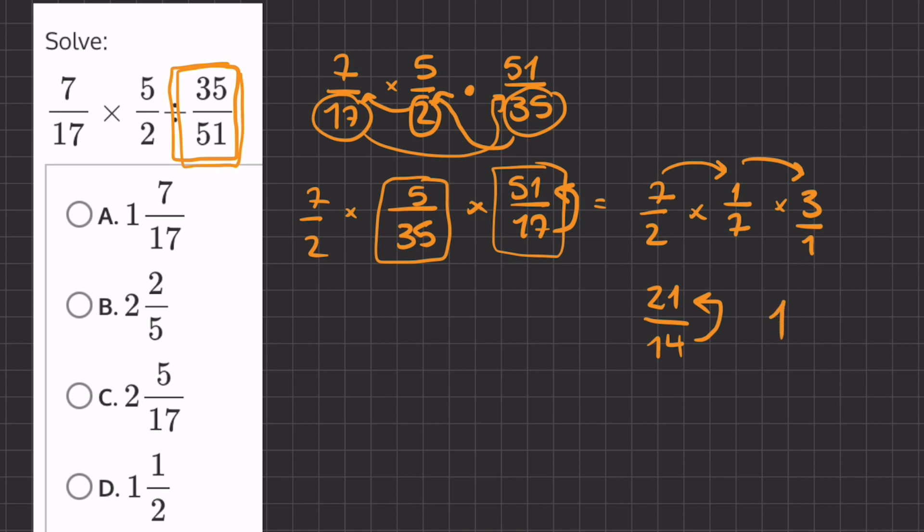And the answer is once. And to find our remainder, we'll do 21 minus 14, which will give us 7. So, our remainder is 7, with a denominator of 14.